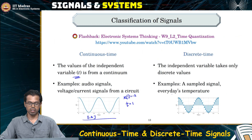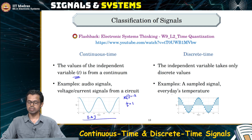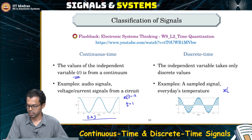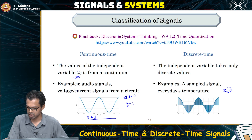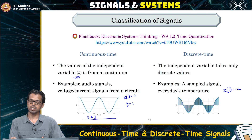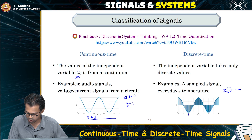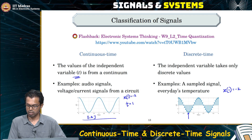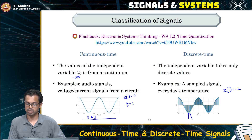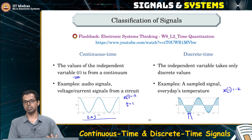A discrete time signal is one where the time variable takes only discrete values. If I know the signal x at time t equals 1, I can clearly tell what is going to be the next time instant for a discrete time signal. I can say what the next sample is just by looking at it. The notion of 'nextness' is present in discrete time, whereas it is not present in continuous time.